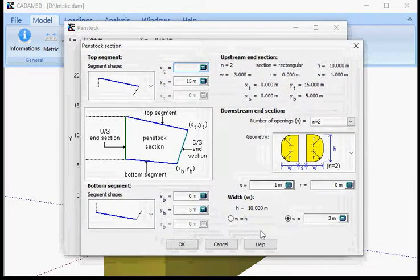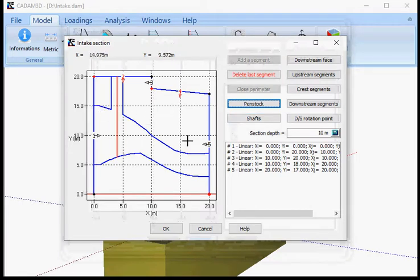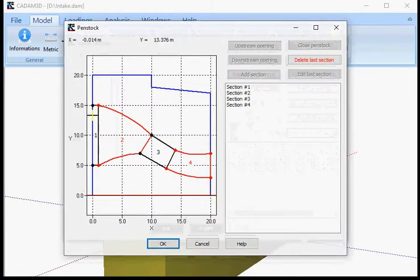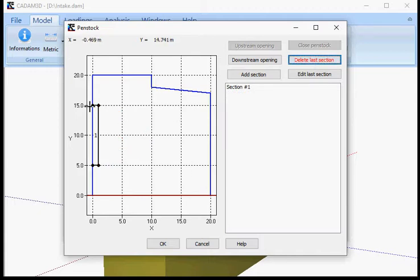I'm going to come back. I can do cancel here. The penstock here is defined by four sections. I'm going to delete those sections. You can see there's upper profile and lower profile here. I'm going to delete that.